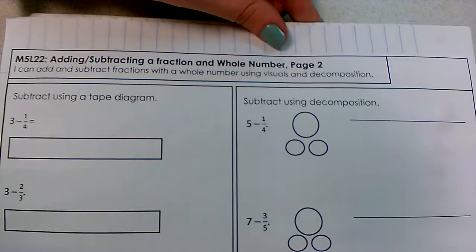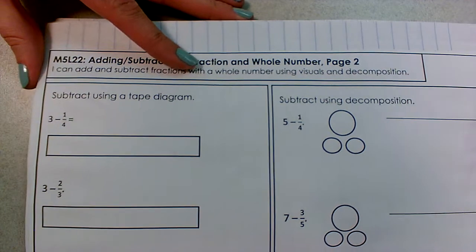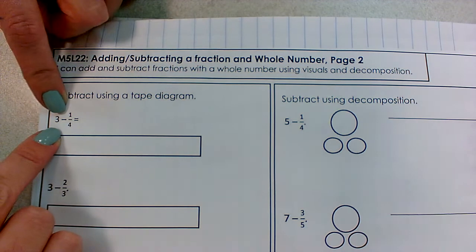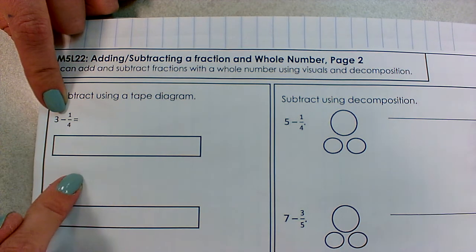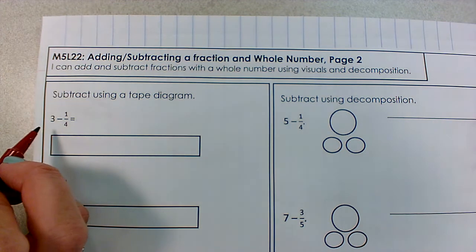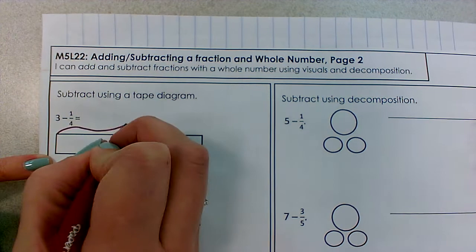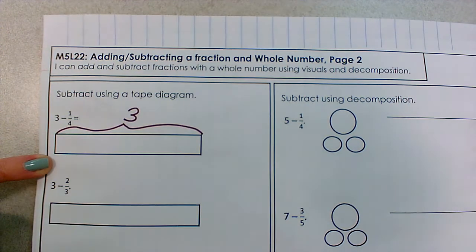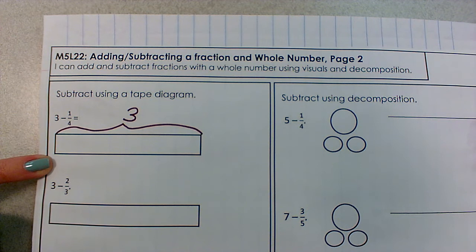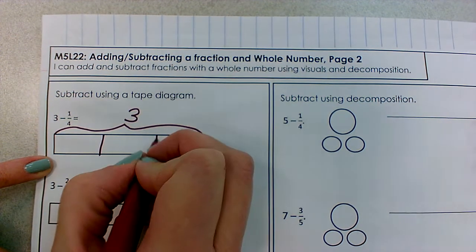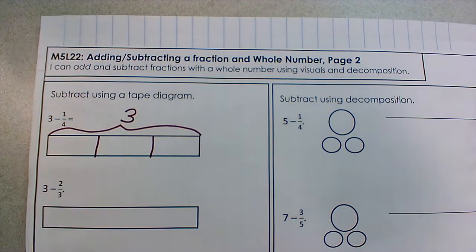Flip to your next page of notes. Now we're going to look at subtraction. We were able to easily add using our tape diagram — I just smush them together. But when I subtract I can't smush numbers together. So my first problem is three minus one fourth. I'm going to turn this tape diagram into three, splitting it to show one, two, three wholes. But now I want to subtract one fourth and I don't have fourths anywhere here, so somehow I need to create fourths.